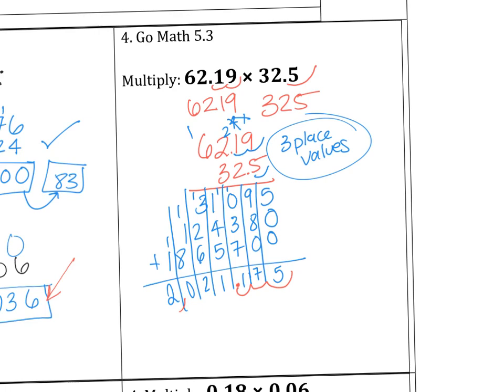So our answer, 62.19 times 32.5 is 2,021.175. Whoa, that's a lot. I'm going to use my calculator just to make sure that we got it right. And we got it right.